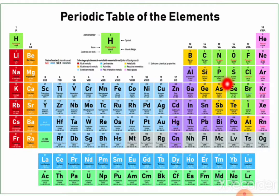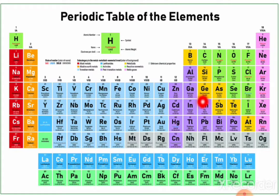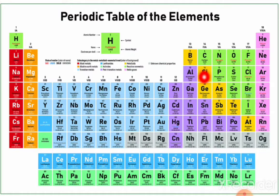Now, in P-block elements, first is group 13: boron, aluminium, gallium, indium, thallium. How to remember this? Simple trick: 'balengit' — boron, aluminium, gallium, indium, thallium.